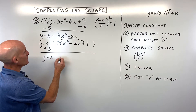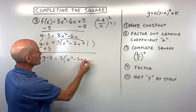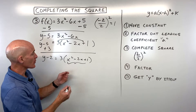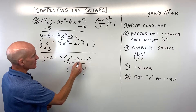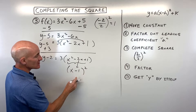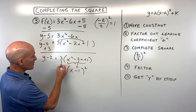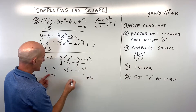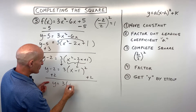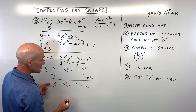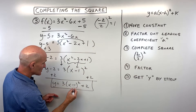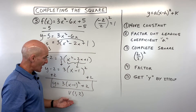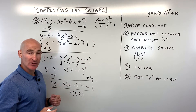The quantity in parentheses is a perfect square trinomial. Using the shortcut, half of negative two is negative one, so it factors as x minus one squared. Bring down the a value. The last step is to get y by itself by adding two to the other side. That gives y equals three times the quantity x minus one squared plus two — that's in vertex form. The vertex is at positive one, two; the three is stretching it and it's positive so the parabola opens up.